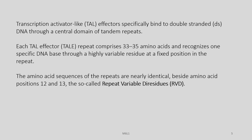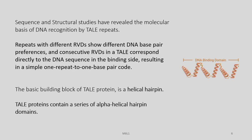The amino acid sequences of the repeats are nearly identical besides amino acid positions 12 and 13, which are called the repeat variable di-residues (RVDs). So out of these 34 amino acids, except positions 12 and 13, everything else is identical. Sequence analysis and structural studies have revealed the molecular basis of DNA recognition by the TAL repeats. Repeats with different RVDs—different amino acids at positions 12 and 13—have different DNA base pair preferences, and consecutive RVDs in a TAL correspond directly to the DNA sequence in the binding site, resulting in a simple one-repeat-to-one-base-pair code.